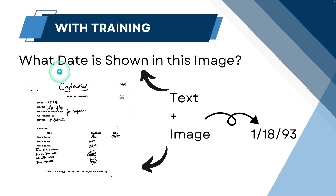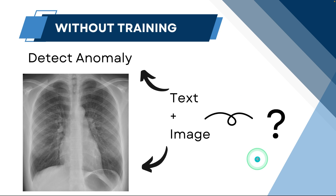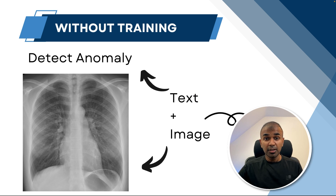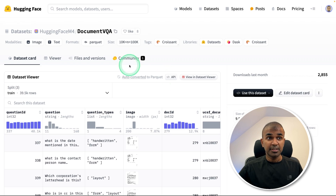Similarly, you can teach a vision language model to predict the answer. This also applies for any health-related things, such as detecting anomaly from an image. You can train the model to do this. By the end of this video, you will learn how to train a model to detect what's in the image, how you can use a custom dataset such as document visual question answering.